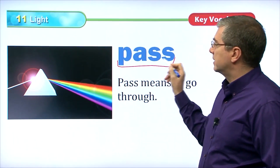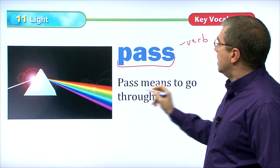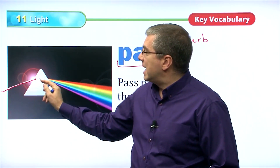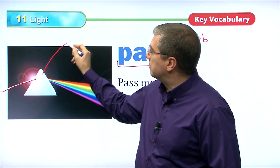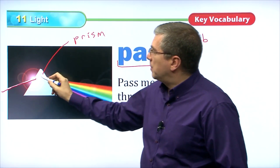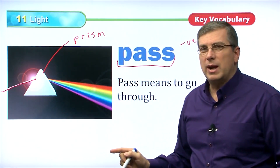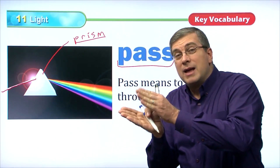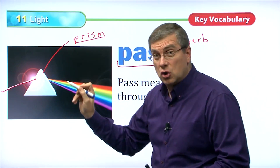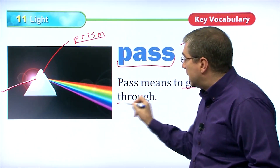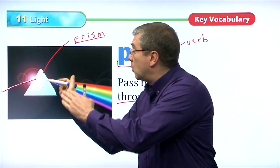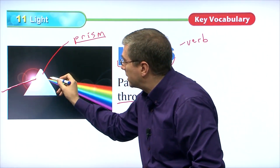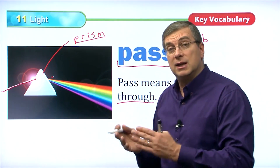Next we have the word pass. Pass, in this case, is a verb. Pass means to go through. We have light coming in this direction, and it hits this prism. What happens is the light is passing through, and it's very interesting what happens to light when it passes through a prism. The light will hit here, change direction, and the prism will separate the light into many different colors. The light is going through this piece of glass, and when it passes through, the glass is denser than air. It separates the light, and on the other side you can see all the different colors that light is made up of.